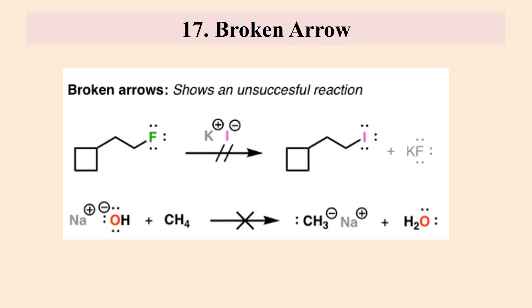The last one is the broken arrow. It is shown in two ways: by placing two lines or by placing a cross on the arrow. It shows that we have tried this reaction but it did not work — it represents an unsuccessful reaction. That is all about arrows in chemistry. I hope that you have learned something new.